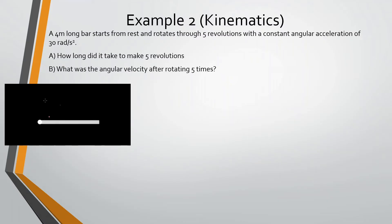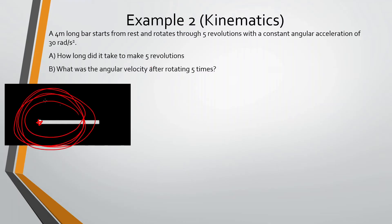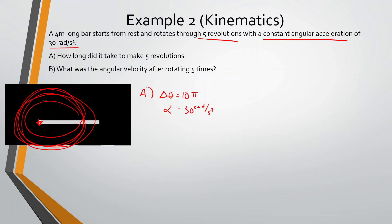A four-meter long bar starts from rest and rotates five revolutions with a constant angular acceleration of 30 radians per second squared. How long did it take to make five revolutions? So what do we know? It makes five revolutions. One time around is 2π, so five times around equals 10π. We know alpha equals 30 radians per second squared, the bar is four meters long, and omega-initial equals zero. We're looking for time.